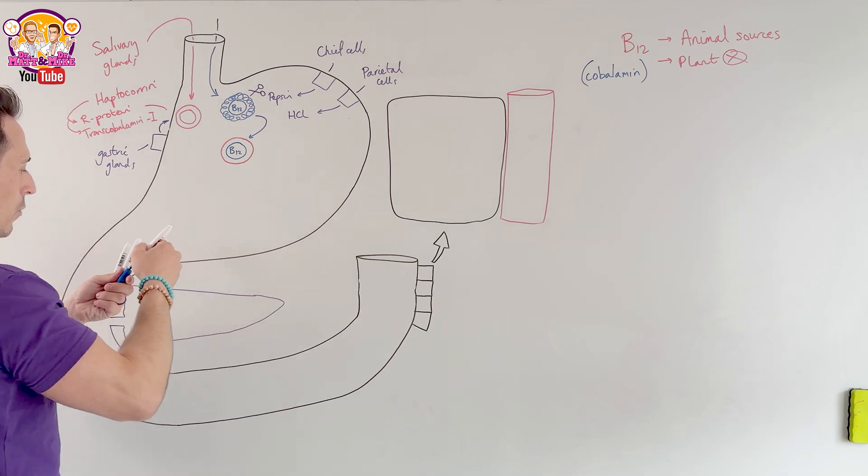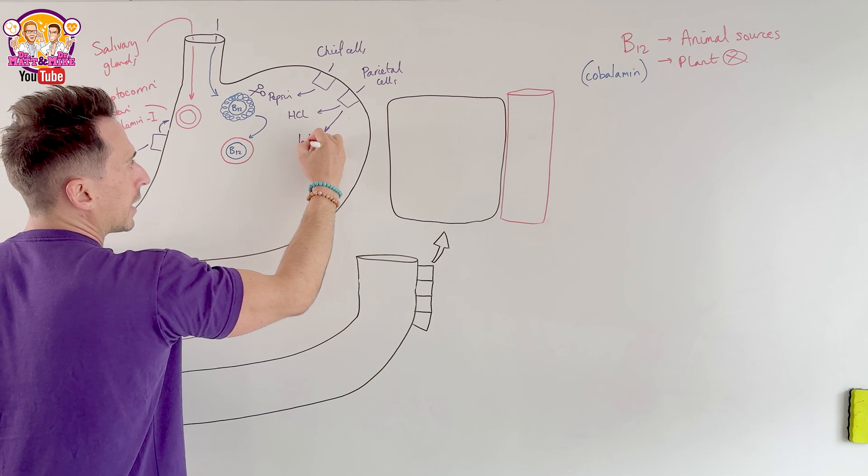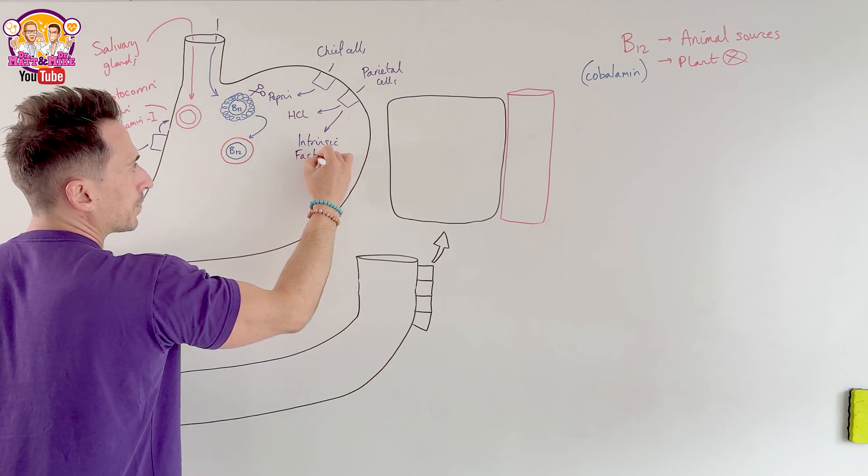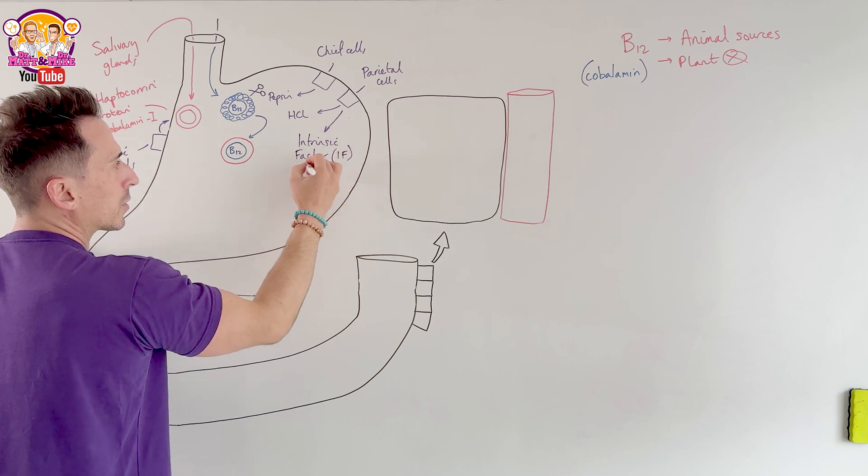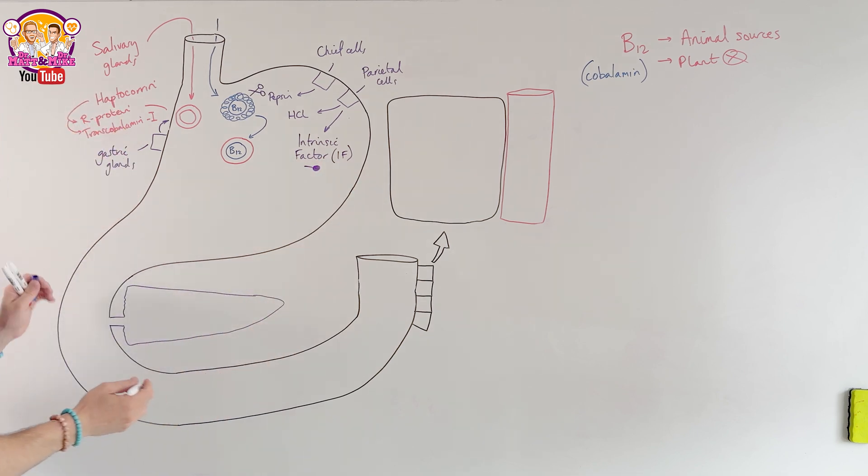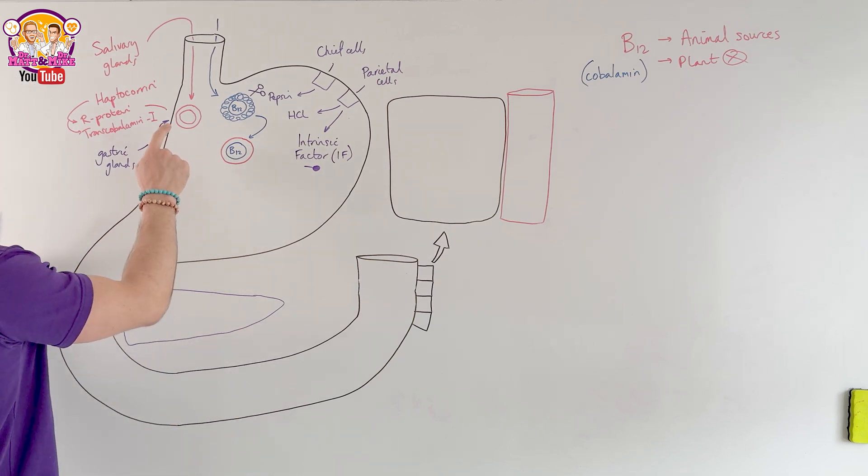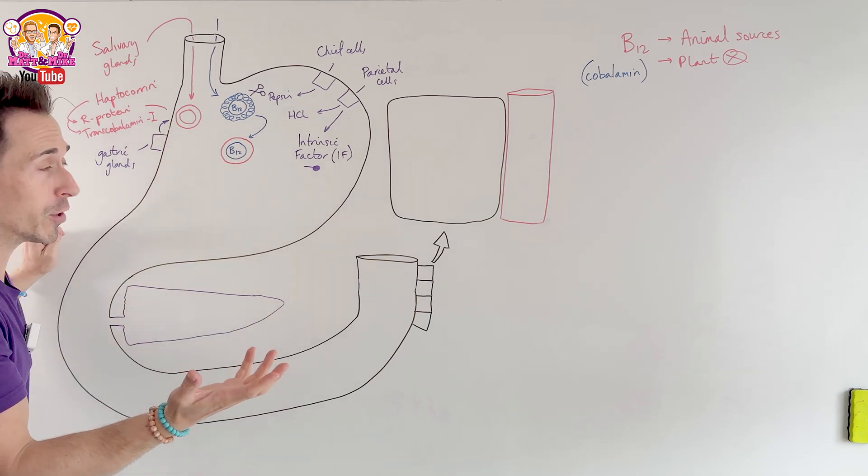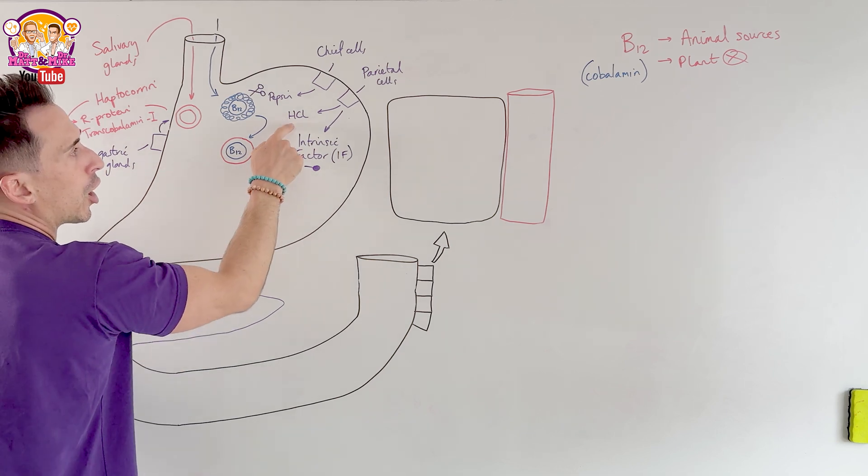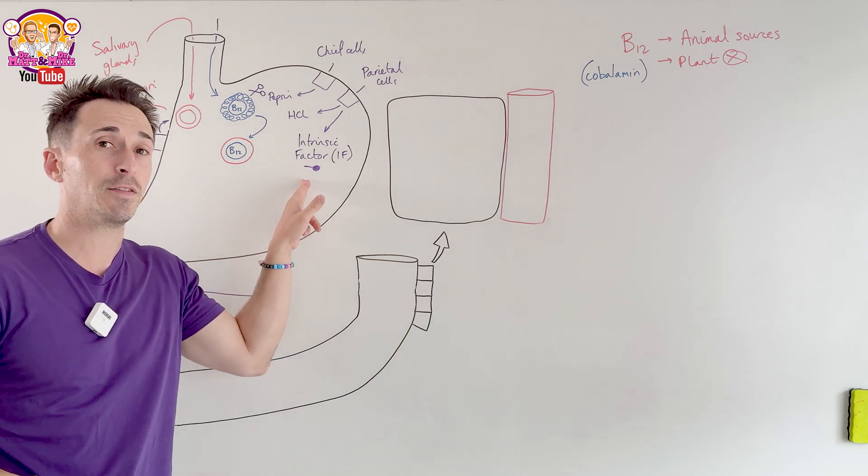Importantly, our parietal cells are also going to produce something. It's also going to produce something called intrinsic factor. Let's write it as IF. And I'm going to draw intrinsic factor like this. There's intrinsic factor. Intrinsic factor really wants to bind to B12, but it can't for two reasons. One, the haptocorin, it's got there first. It got there either in the oral cavity or down here in the stomach. And two, hydrochloric acid is inhibiting intrinsic factor from binding. Intrinsic factor can't bind in acidic environments. That's important.